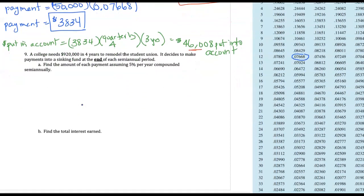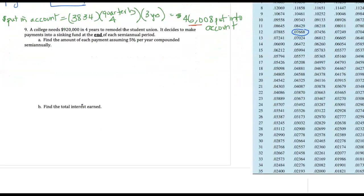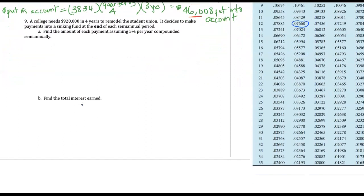A college needs nine hundred twenty thousand dollars in four years to remodel the student union. It decides to make payments into a sinking fund at the end of each semi-annual period. The end means it's an ordinary annuity. Find the amount of each payment assuming five percent per year compounded semi-annually.